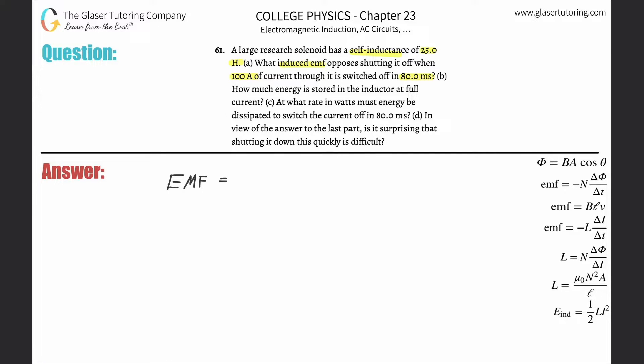The change in time over which that current is changed. So the formula usually has a negative sign in it; that's just to denote that the EMF induced will oppose the natural EMF, but you know, just leave it out, it doesn't really matter.